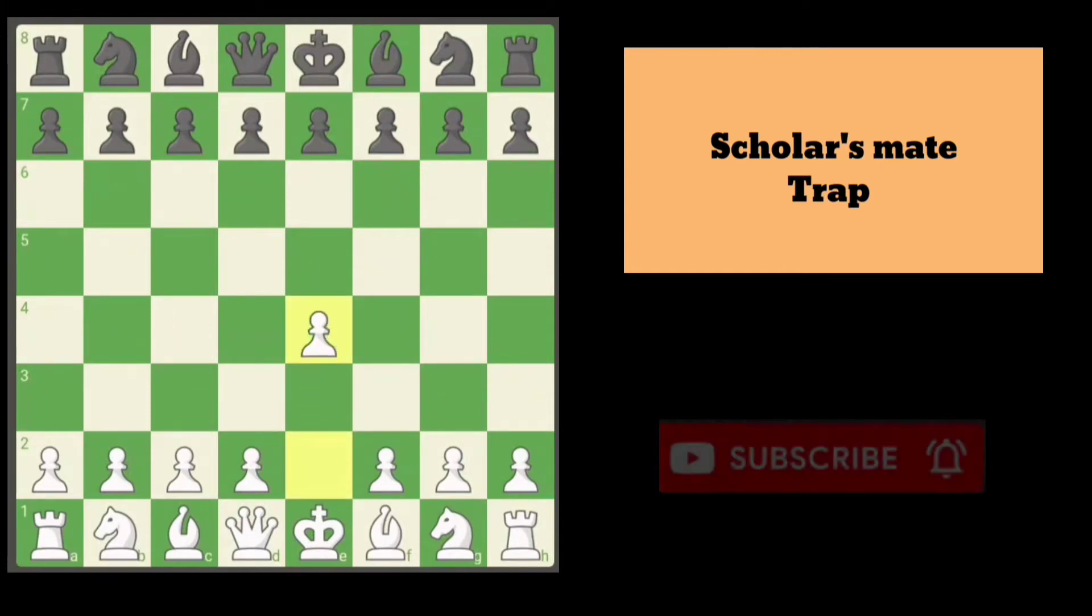White opens with e4. Black's most common opening defense against e4 is e5. After e4, white can develop the light-squared bishop as well as the queen.